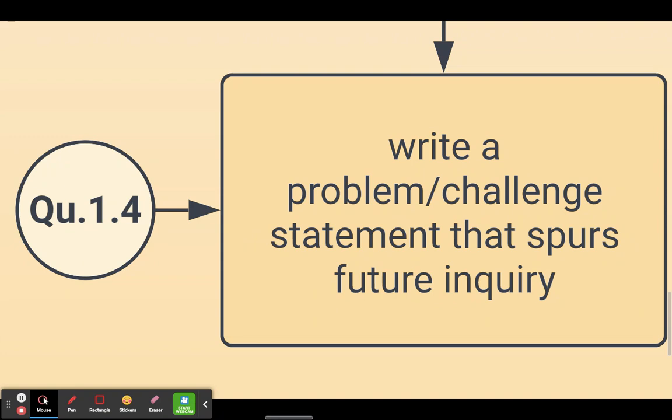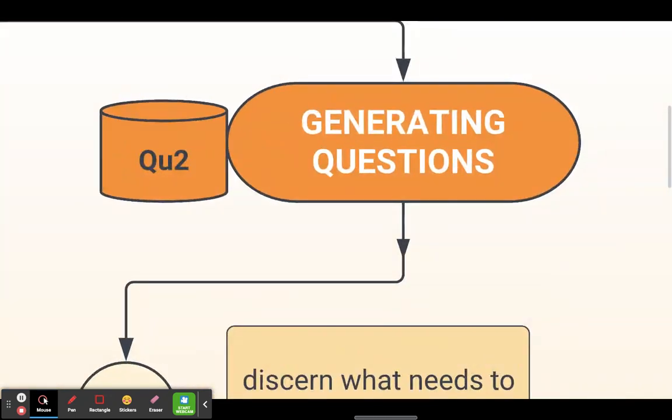The fourth competency in this group, 1.4, is actually writing a problem statement, making sure you've got the challenge opportunity down. This will start to spur future inquiry. Writing a problem statement is going to take us to the next focal point, which is generating questions - Question Generation, one of our favorites.